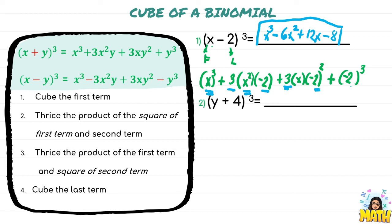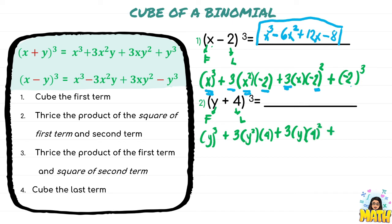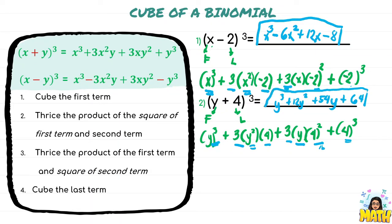Next example: the first term is y and the last term is 4. We follow the rule — cube the first term, add thrice the square of the first term times the second term, plus thrice the first term times the square of the second term, plus the cube of the last term. Computing: y cubed; 3 times 4 times y squared gives 12y squared; 3 times 4 squared times y — that's 16 times 3 equals 48, giving 48y; plus the cube of 4, which is 64. So we have y cubed plus 12y squared plus 48y plus 64.